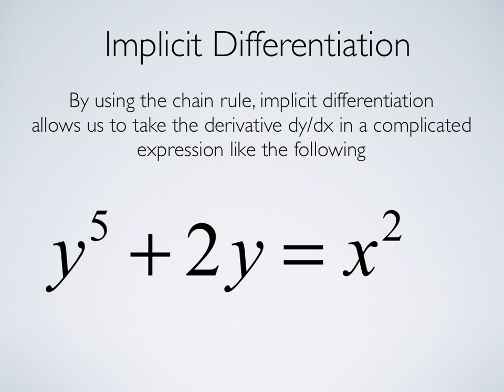First, consider y to the fifth plus 2y equals x squared. So, each time we run into a term containing y, we're going to use the chain rule.